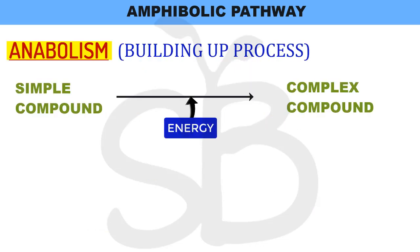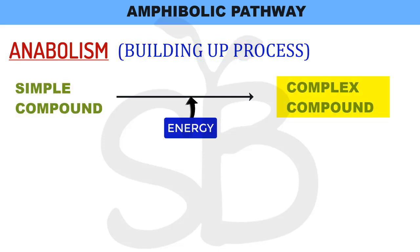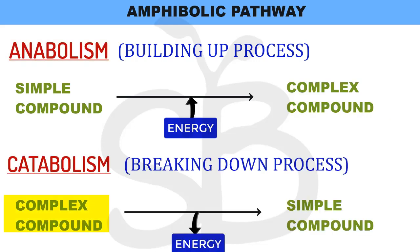Anabolism is a building up process — that is, small molecules are converted into complex compounds. One process is anabolism, which produces a complex type of compound.